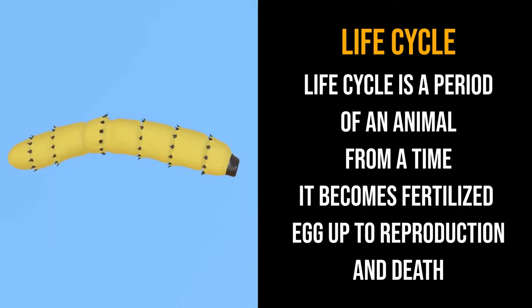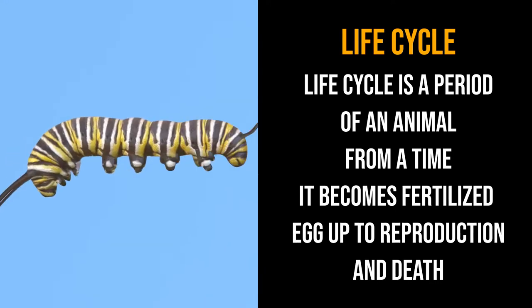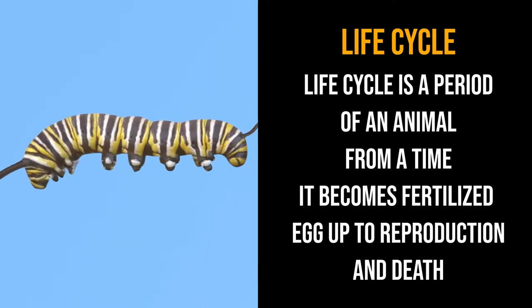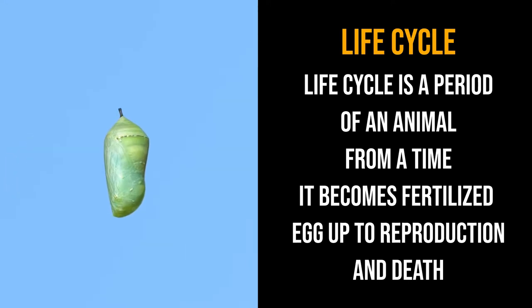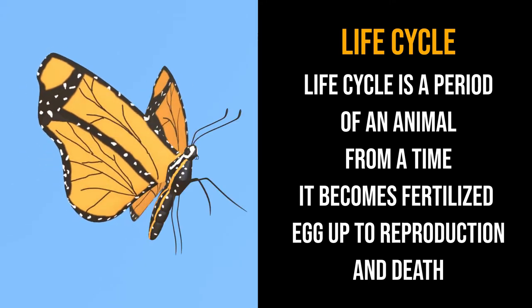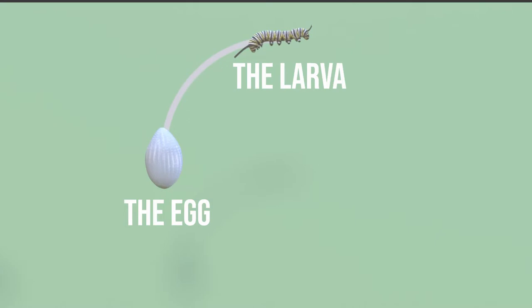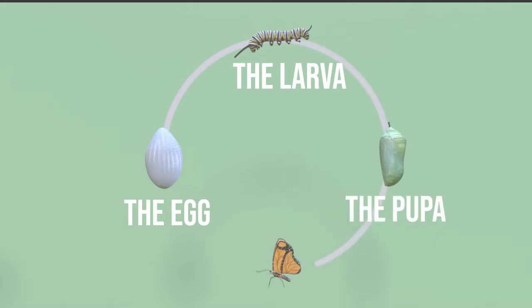A life cycle is the period of an animal from the time it becomes a fertilized egg up to reproduction and death. There are four stages in the life cycle of a butterfly: the egg, the larva, the pupa, and the adult.